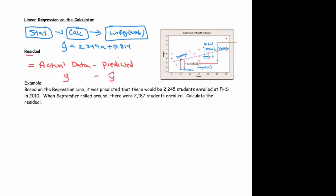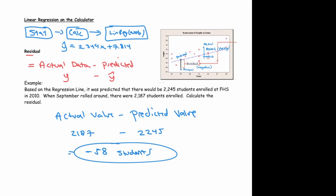The residual is the actual value minus the predicted. If the actual value is 2,187 and the predicted is 2,245, then we get a residual of negative 58 students.